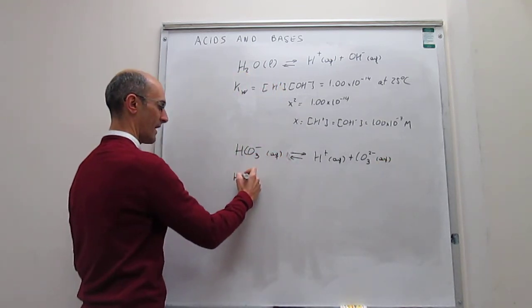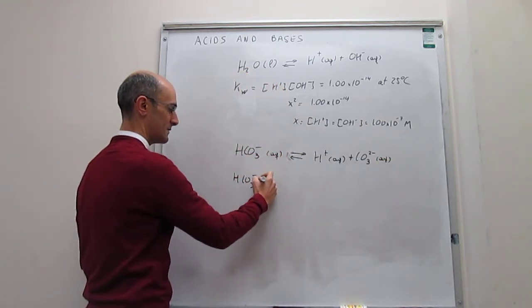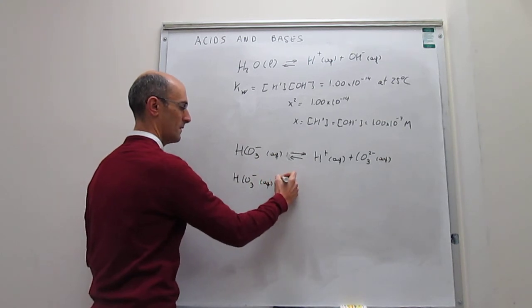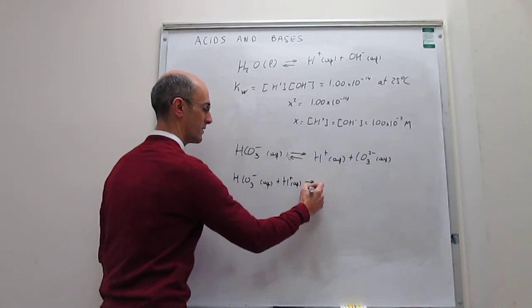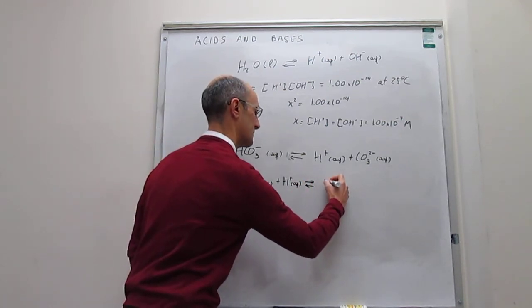At the same time, hydrogen carbonate can act as a base and accept a proton. So you will be able to accept this proton and then generate carbonic acid.